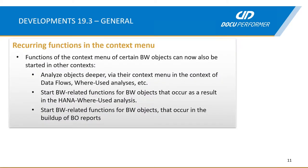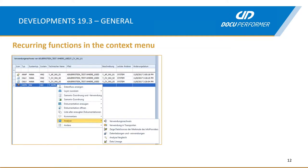We also worked on our context menus and the reoccurring functions across components. It's now possible to analyze objects deeper from various contexts in the DocuPerformer. For example, it's possible to start BW-related analysis functions from a HANA where-used analysis result list, or to start BV-related functions for BW objects out of a BO analysis. Here you can see a result list from the HANA component where we analyzed where a certain calculation view is used. The last entity shown is a HANA composite provider on BW's side, and now it's possible to go straight to the context menu of this composite provider and deep dive into further where-used analysis.